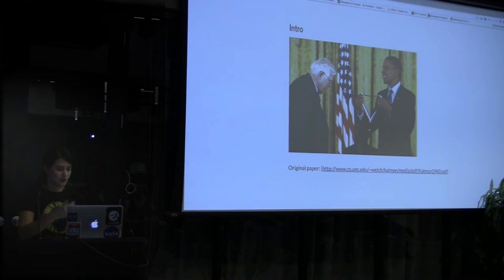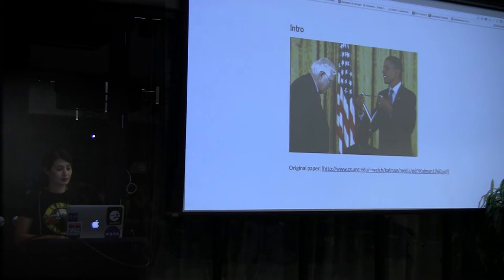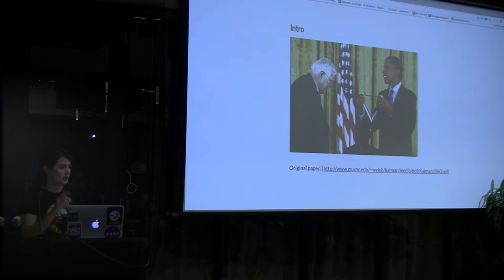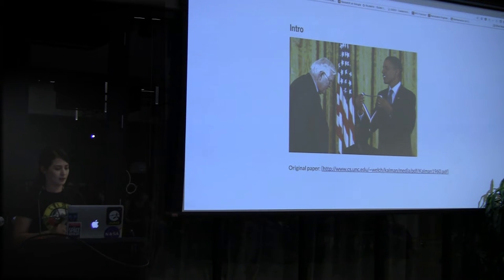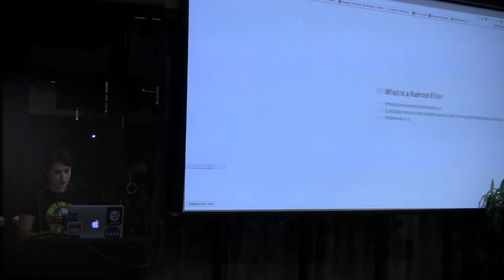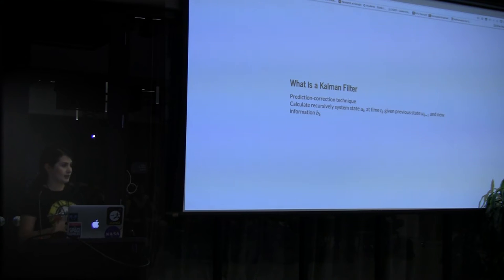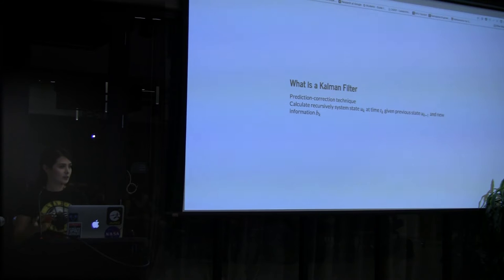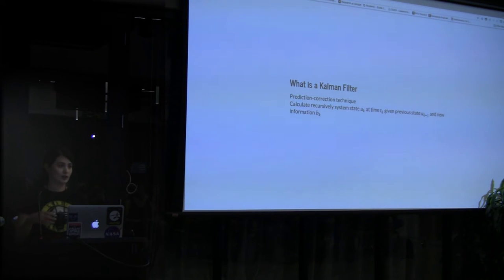This is Rudolf Kalman receiving the National Medal of Science. You can find the original paper on this website, but Cishan also posted it on the Meetup website and it's on the GitHub site. So, what is a Kalman filter? It's an algorithm named after Rudolf Kalman. The original paper has a different title, but everybody knows it as a Kalman filter.